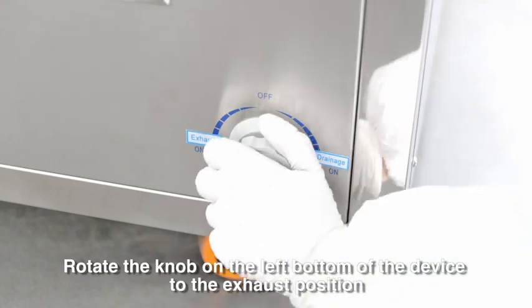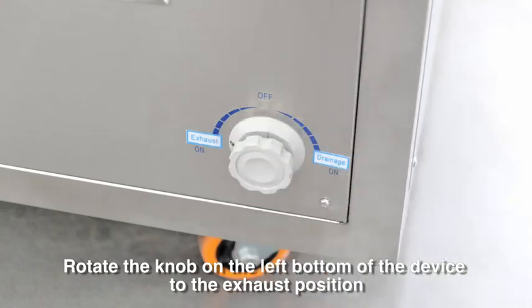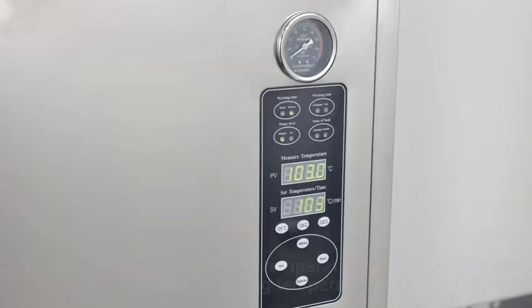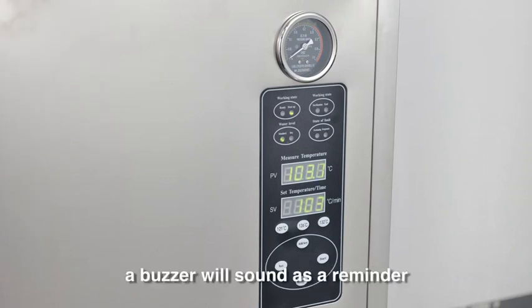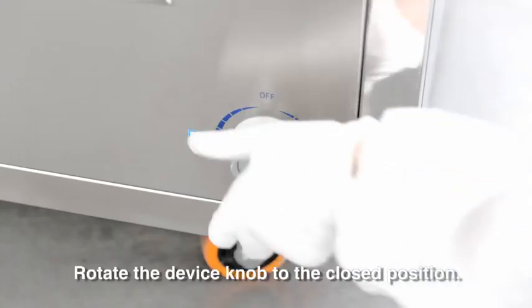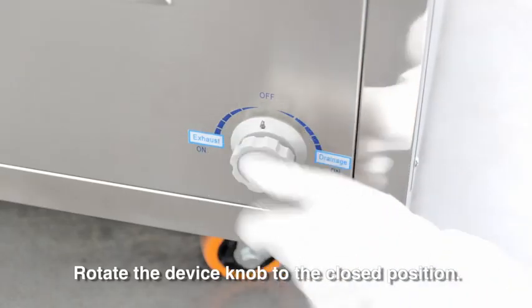Rotate the knob on the left bottom of the device to the exhaust position. When the measured temperature reaches the preheating temperature, a buzzer will sound as a reminder. Rotate the device knob to the closed position.